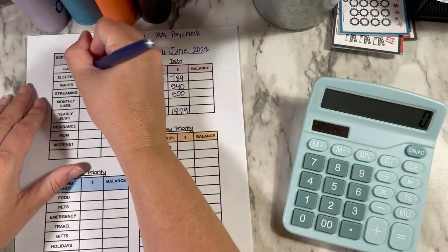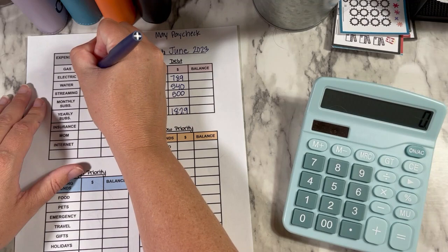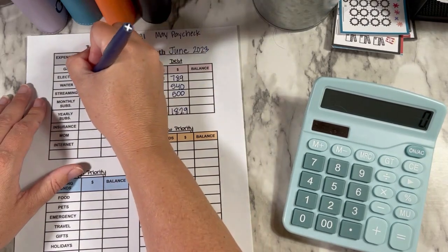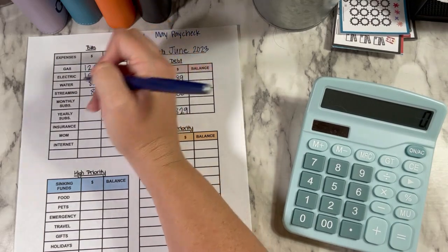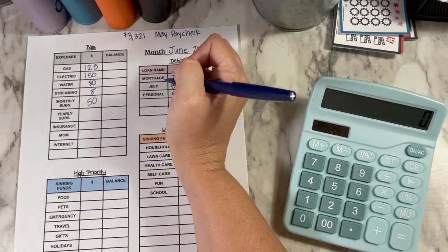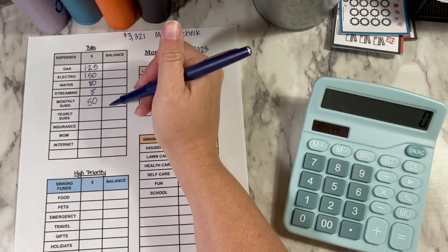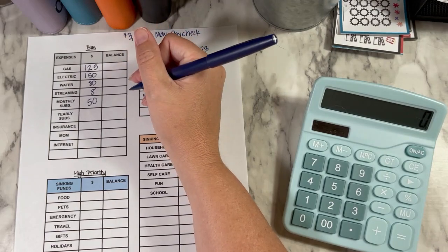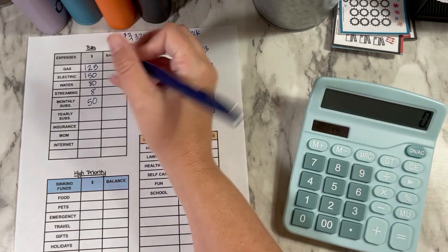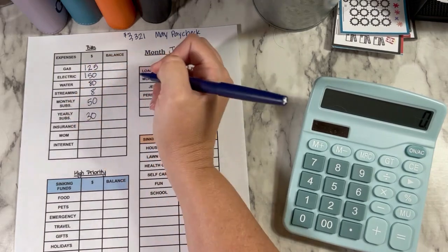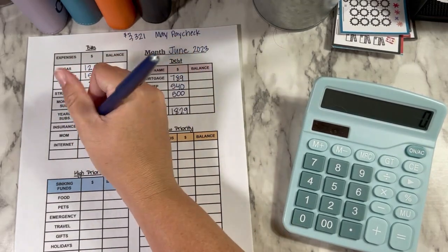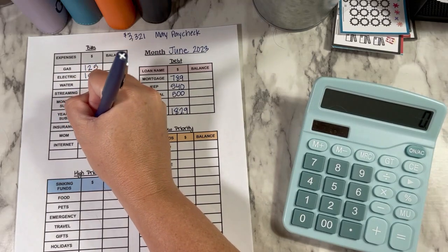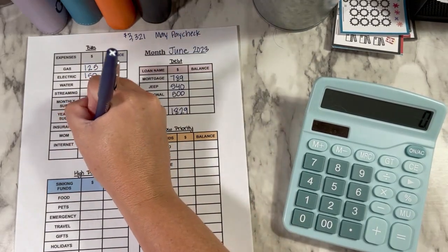For electric, we're going to do $150. For water, we're doing the $80. For streaming, we're doing $8. Monthly subs is $50. I'm going to do this kind of quick because this is pretty much the same in every video. Yearly subs is doing $30. Insurance is $102. My mom for my portion of the phone bill is getting $75 and then internet is $86.